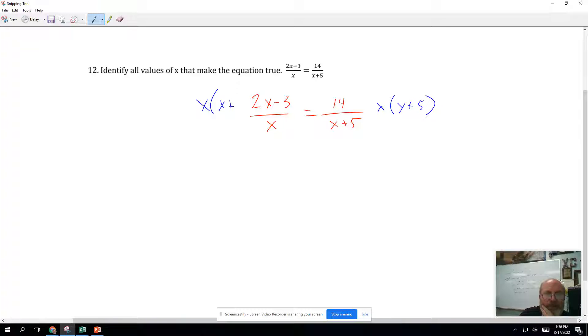Multiplying that on both sides. Make sure X's cancel over here. X plus 5 cancel over here. You're left with X plus 5 times 2X minus 3 equals 14X.